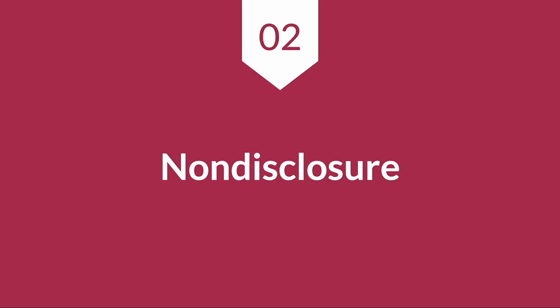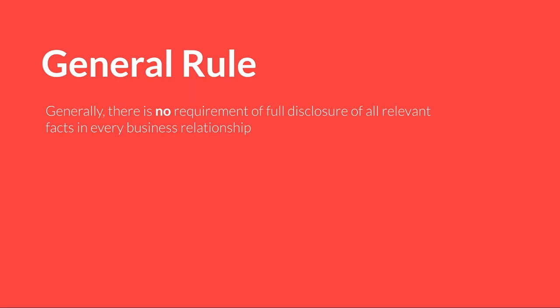Now let's look at non-disclosure, which is closely related but different. Both defenses are about the victim being misled — either through an affirmative statement or, in the case of non-disclosure, by inaction, by the failure to say something. The general rule — and we use phrases like 'caveat emptor,' buyer beware — is that there is at common law no affirmative duty to disclose all the facts you have. You don't have to disclose everything that's wrong with the property or with the car.